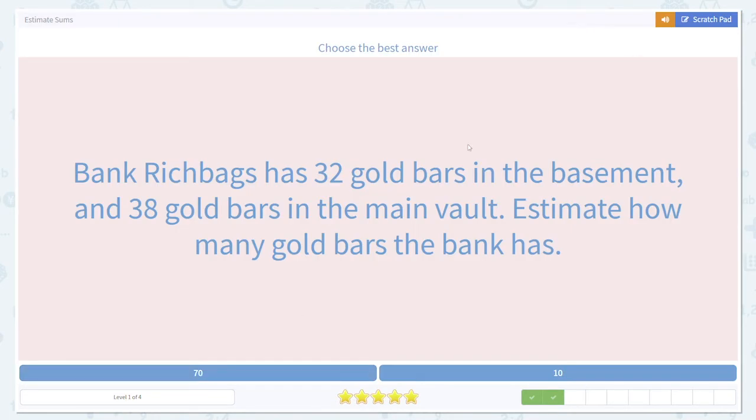Here's another example. Bank rich bags, I'd like to go there, has 32 gold bars in the basement and 38 gold bars in the main vault. Estimate how many gold bars the bank has.